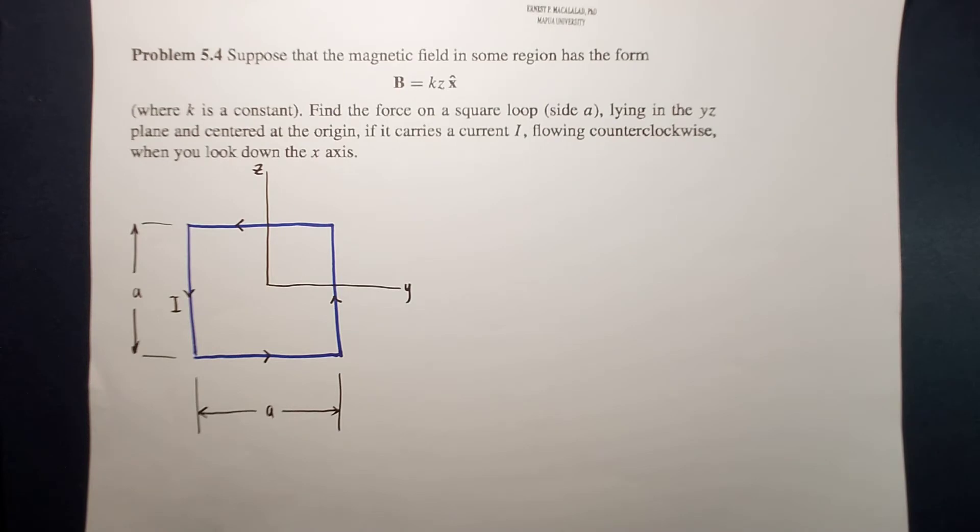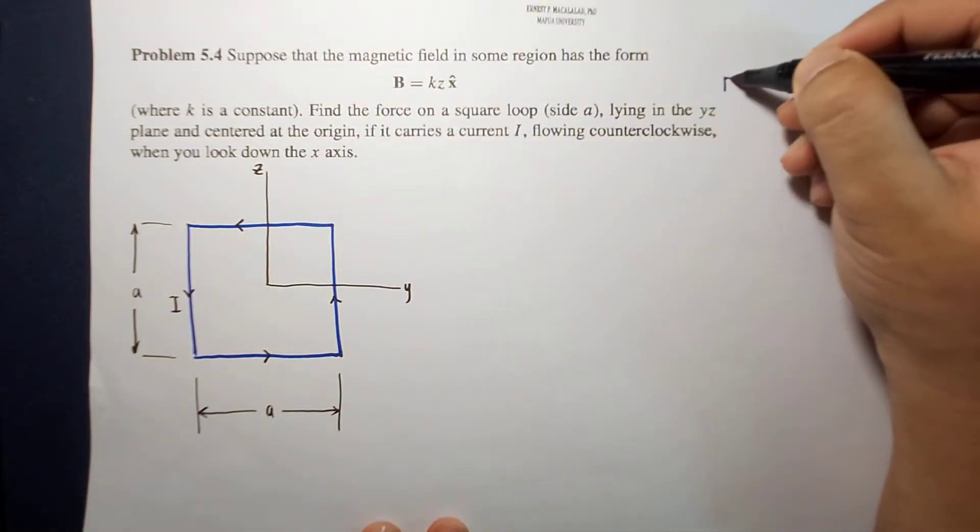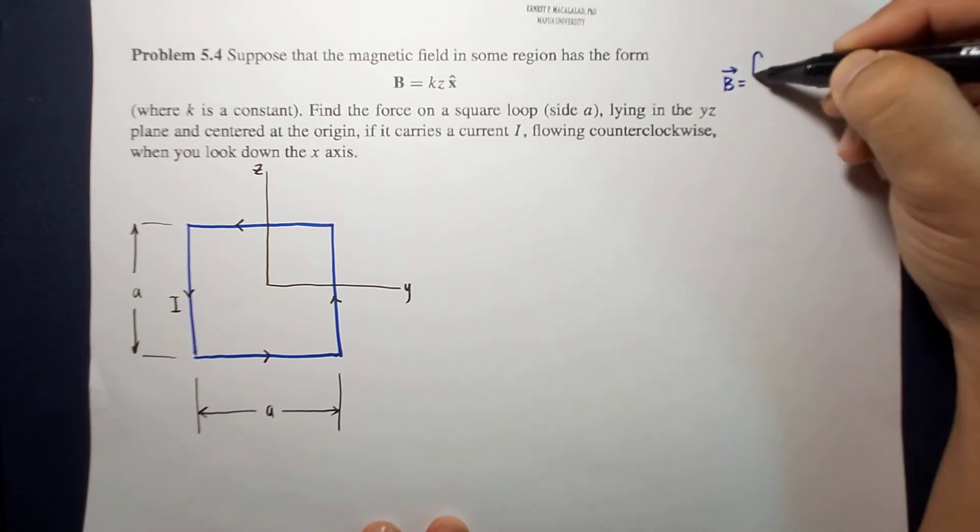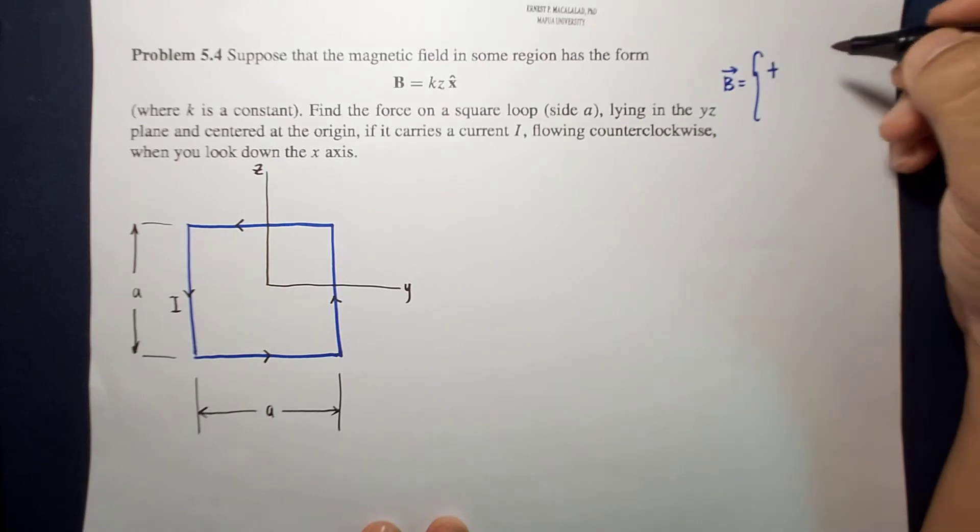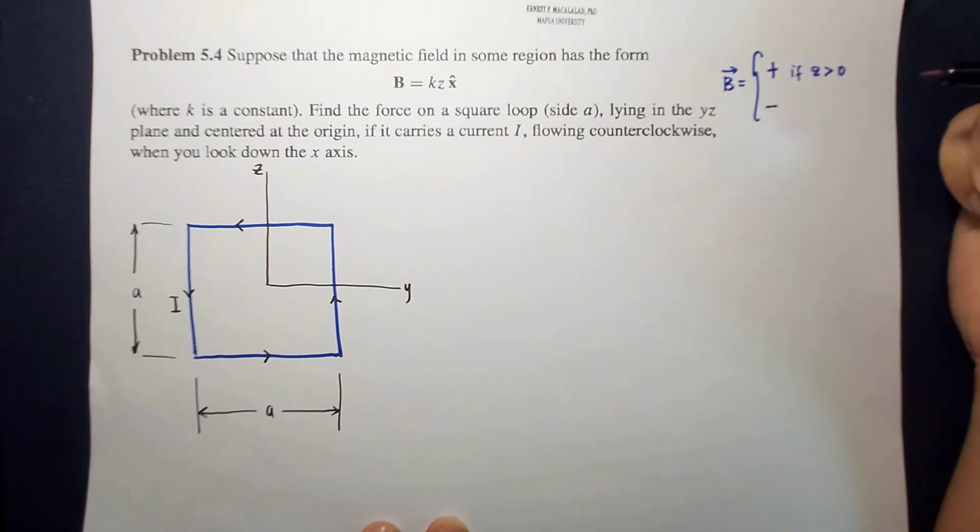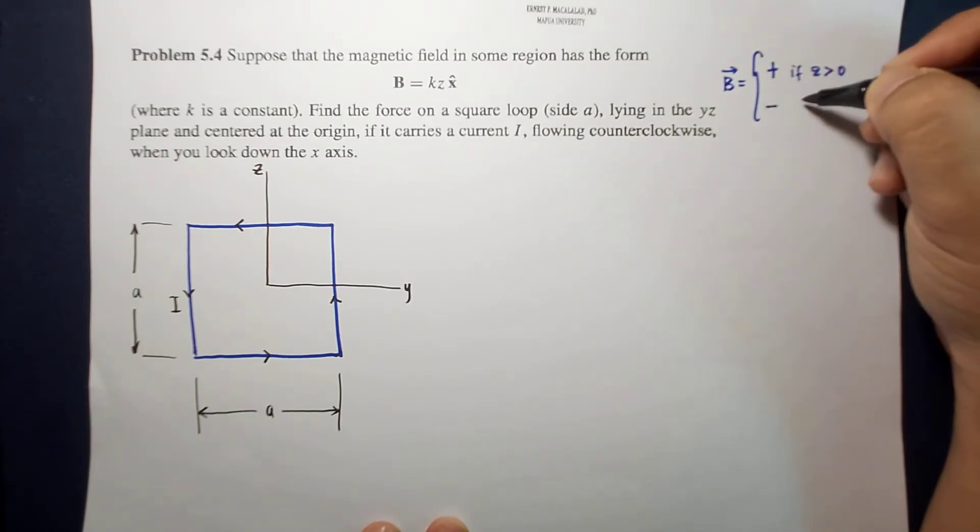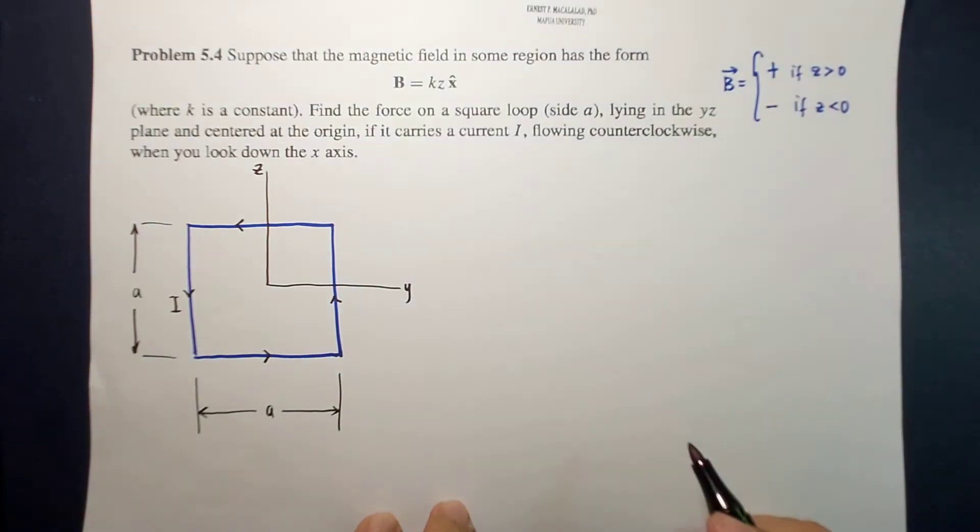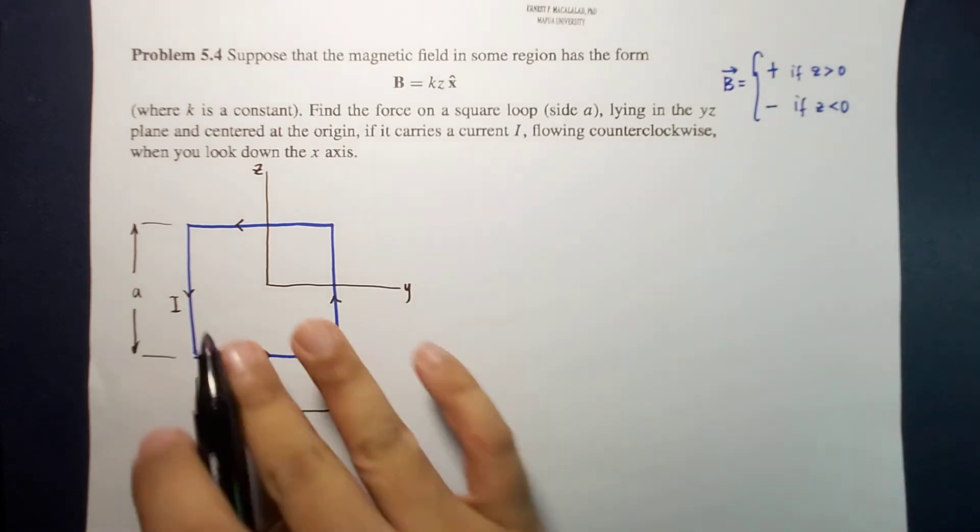If we're going to look at the magnetic field, you will see that the magnetic field is positive if z is greater than zero. If z is less than zero, the magnetic field is negative.